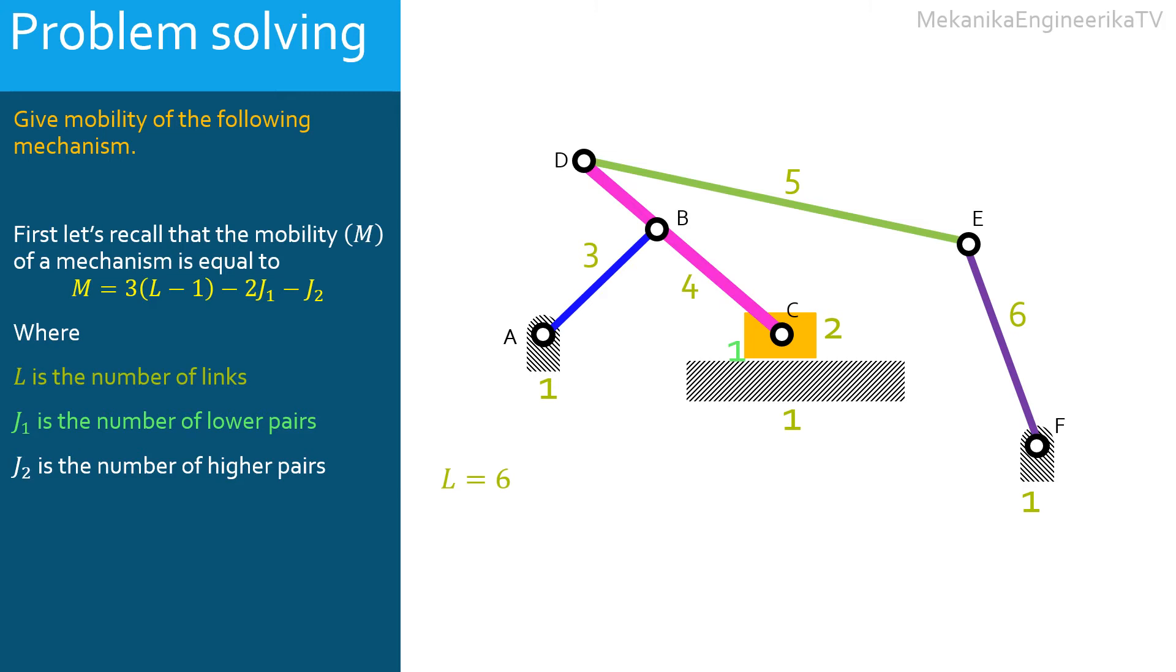The 6 pin or revolute joints are: the pin joint A connecting the ground to the bar AB, the pin joint B connecting the bar AB to the bar CD, and the pin joint C connecting the bar CD to the slider.